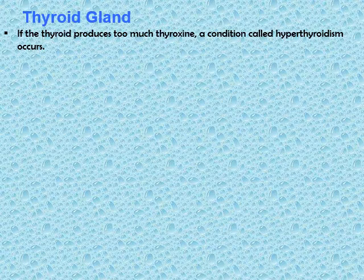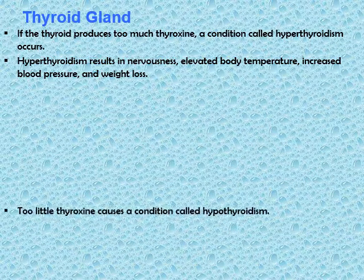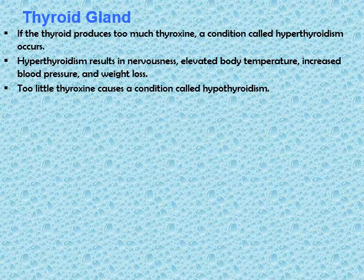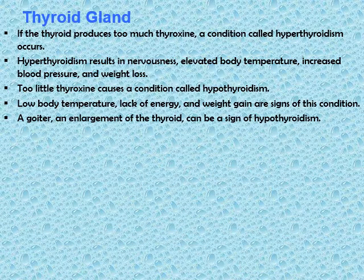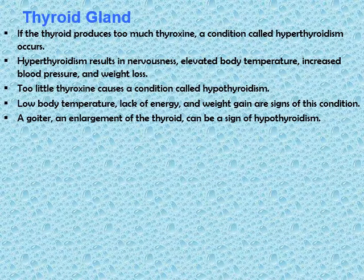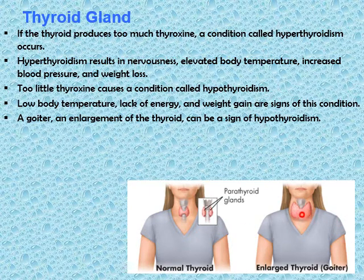If the thyroid gland produces too much thyroxine, a condition called hyperthyroidism occurs, resulting in nervousness, elevated body temperature, increased blood pressure, and weight loss. Too little thyroxine causes hypothyroidism, characterized by low body temperature, lack of energy, weight gain, and a condition called goiter, which is an enlargement of the thyroid gland. As shown in the diagram, a normal thyroid gland is compared to an enlarged thyroid gland due to lack of thyroxine.